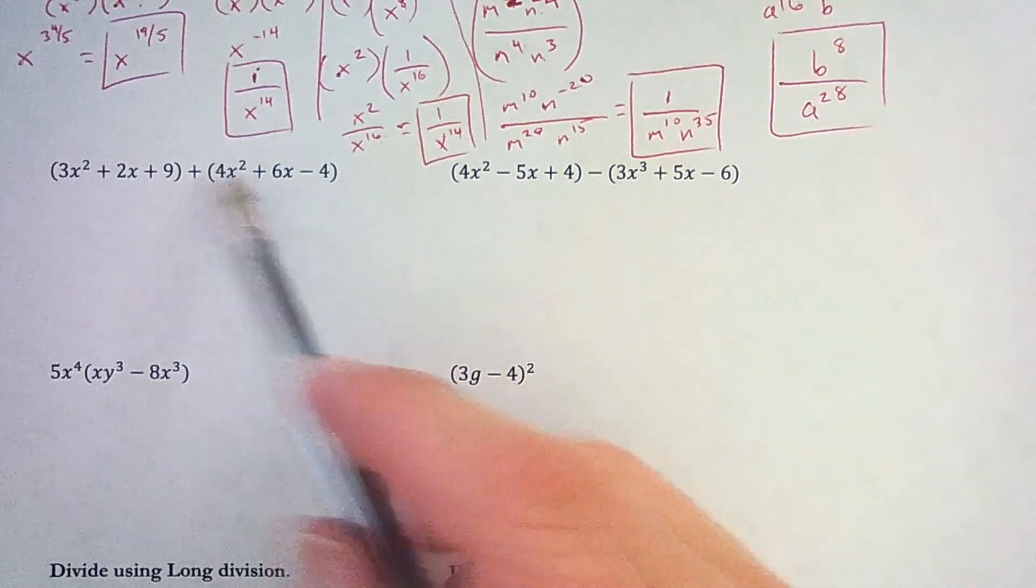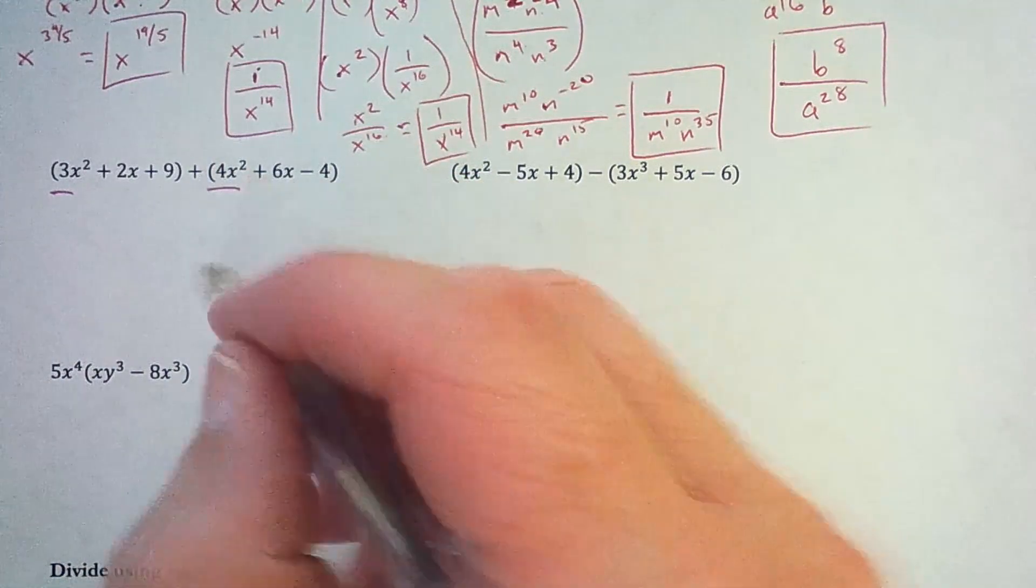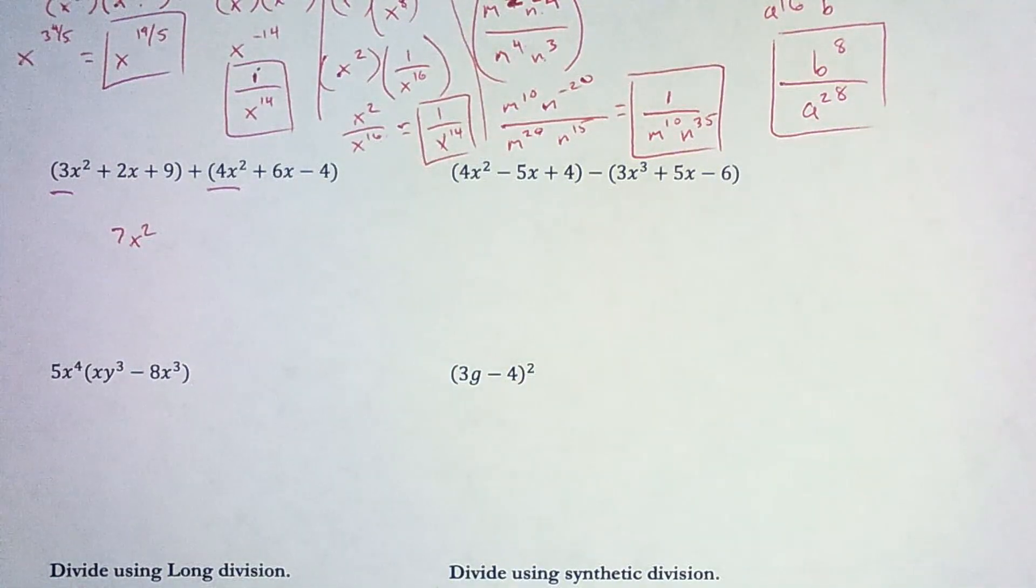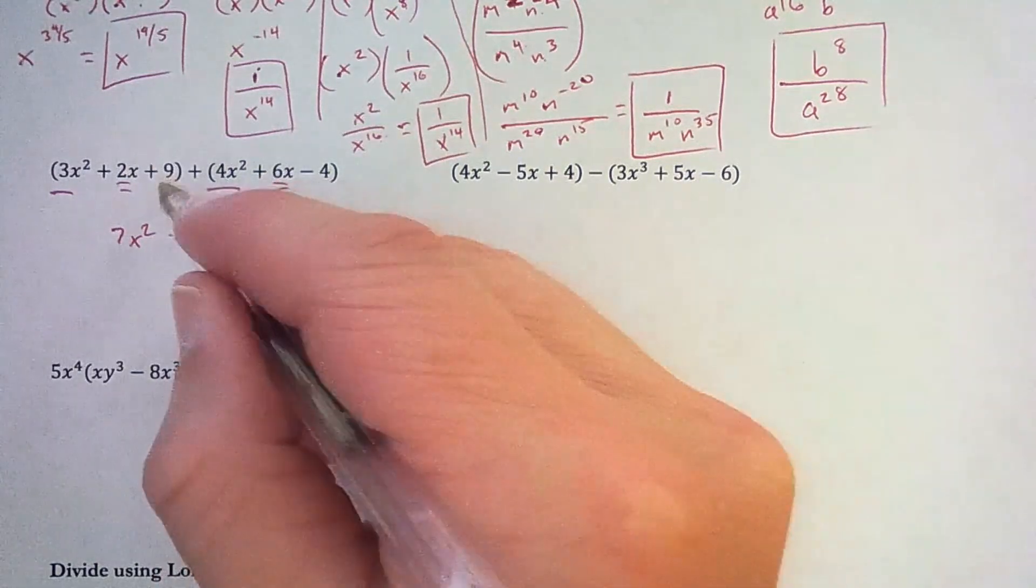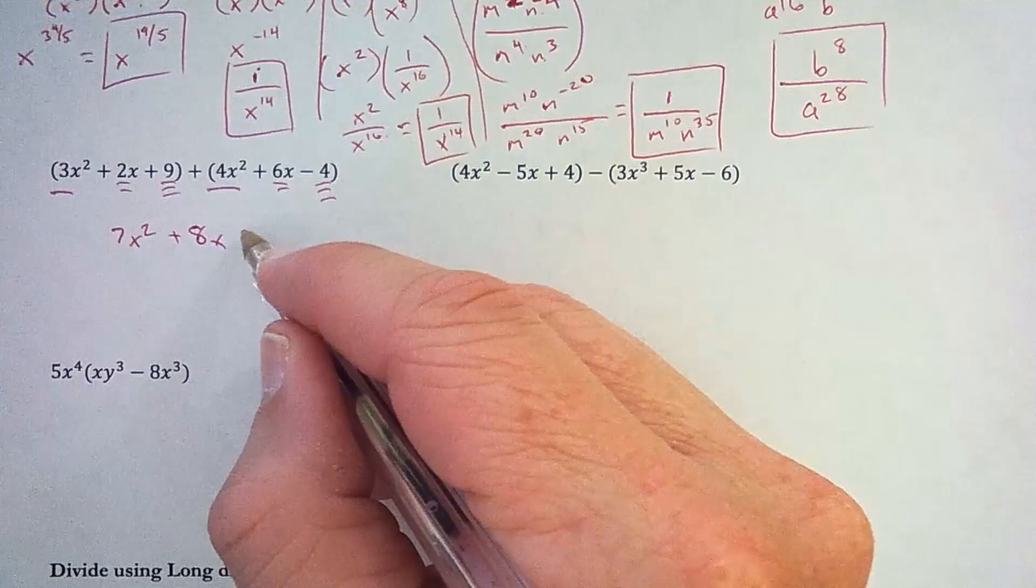Here we are going to add two polynomials, and we simply combine like terms. 3x squared plus 4x squared is 7x squared. 2x plus 6x is 8x, and 9 plus negative 4 is 5.